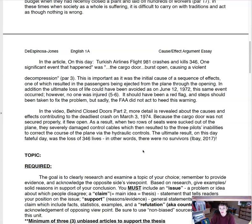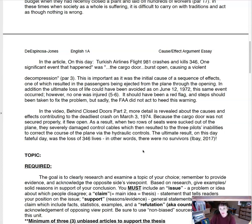In the article 'On This Day: Turkish Airlines Flight 981 Crashes and Kills 346,' one significant event was the cargo door bursting open, causing violent decompression. This is important as it was the initial cause of a sequence of events, one of which resulted in passengers being ejected from the plane through the opening. The ultimate loss of life could have been avoided, as on June 12th, 1972 this same event occurred — however, no one was injured. It should have been a red flag and steps should have been taken to fix the problem, but sadly the FAA did not act to heed this warning.